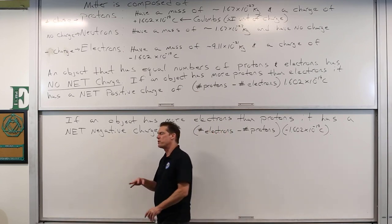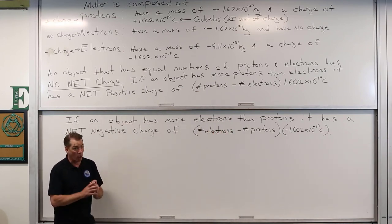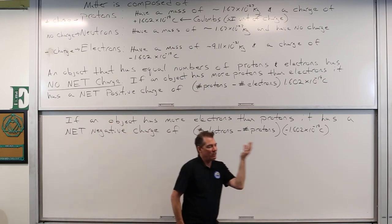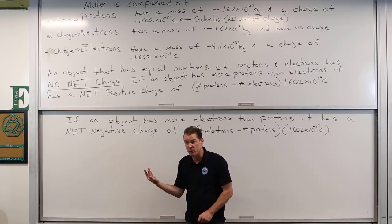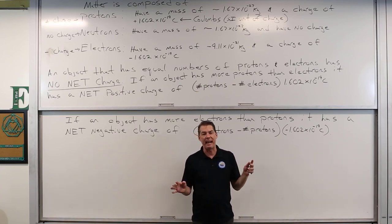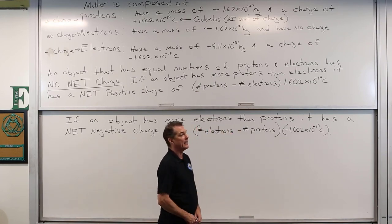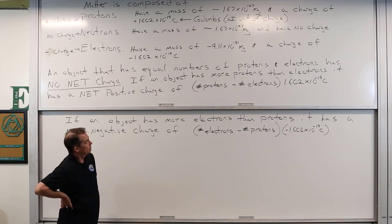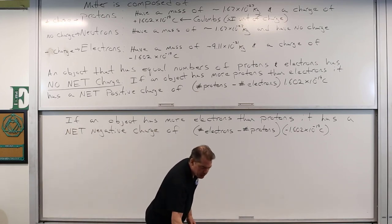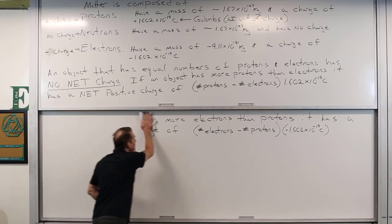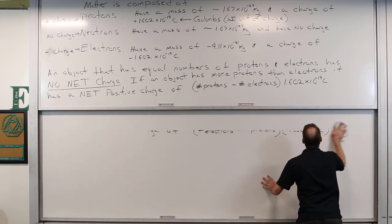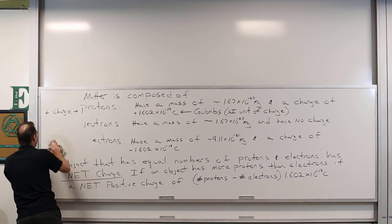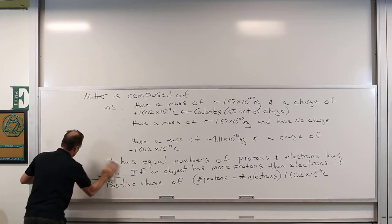We can also produce polarization effects where an object is overall electronically neutral, but one side has a sort of negative charge and the other side has a positive charge that's been separated out. That's what we want to start looking at — charges and producing charge interactions.